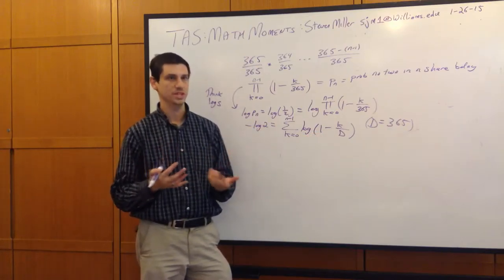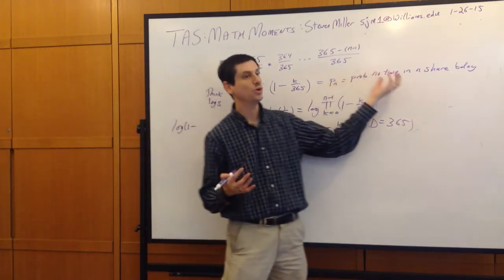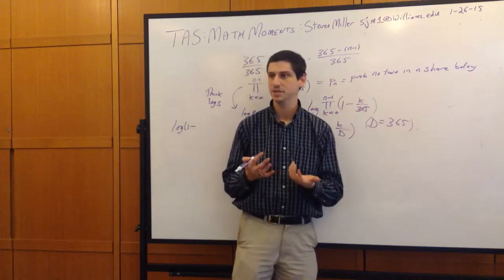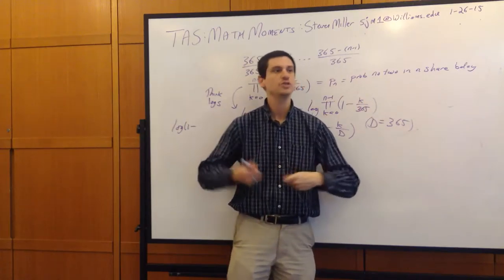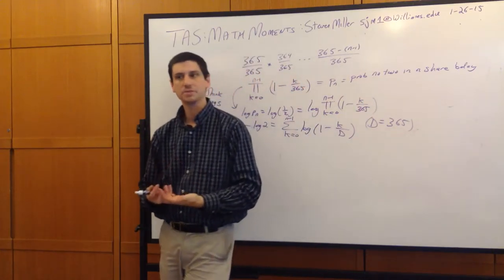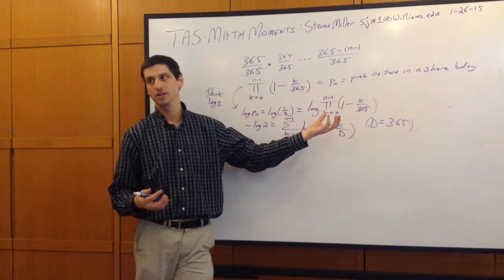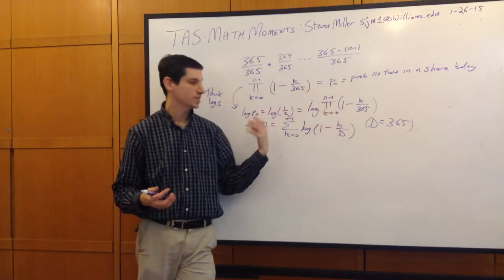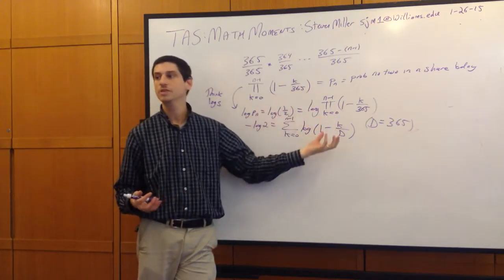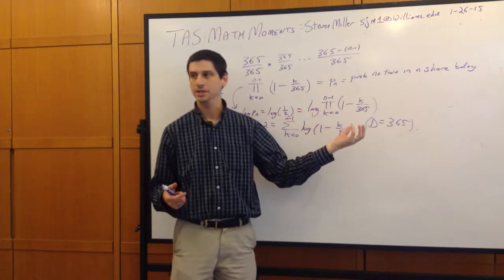Clearly, as d gets larger, it should take more people before we have a 50% chance. But do we think the growth rate is linear in d? Do we think it grows like square root of d? Like logarithm of d? It's not immediately clear.